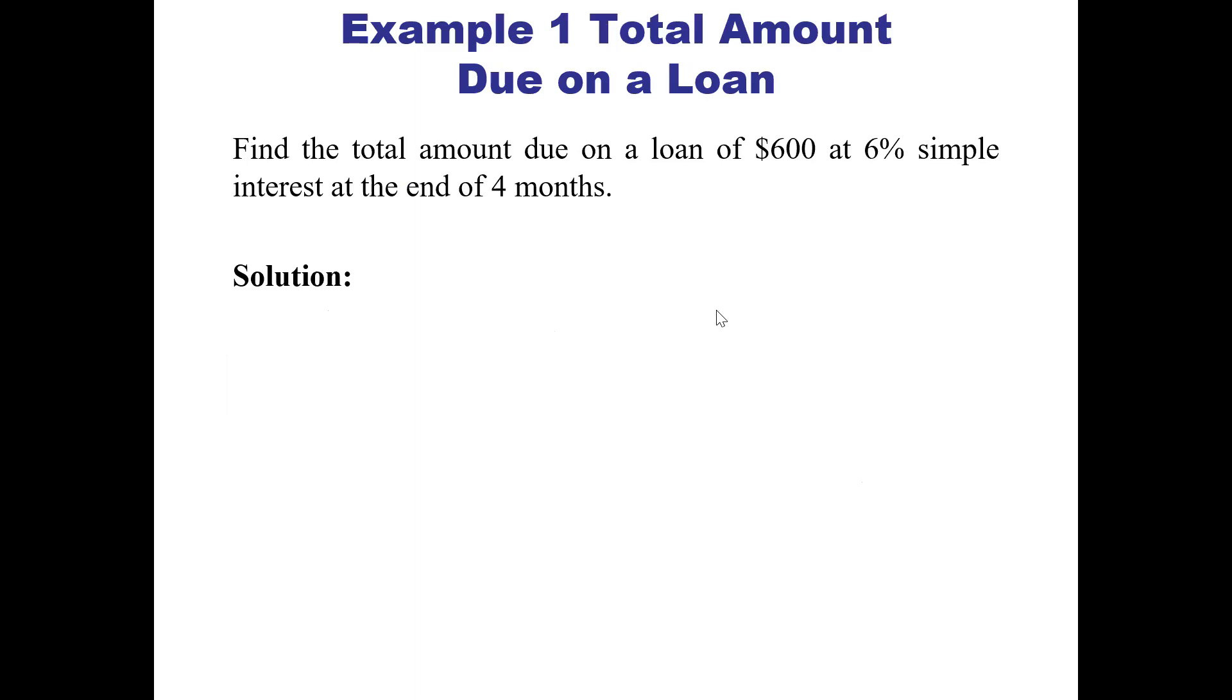This problem says: find the total amount due on a loan of $600 at 6% simple interest at the end of four months. We're looking for A, the total amount due.